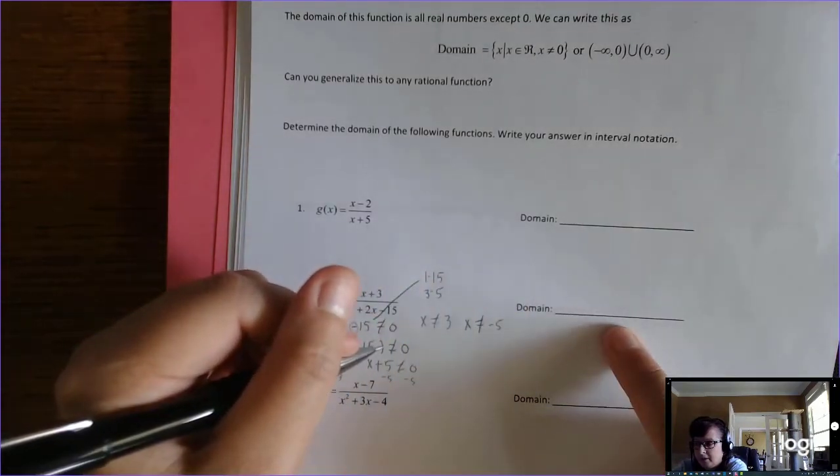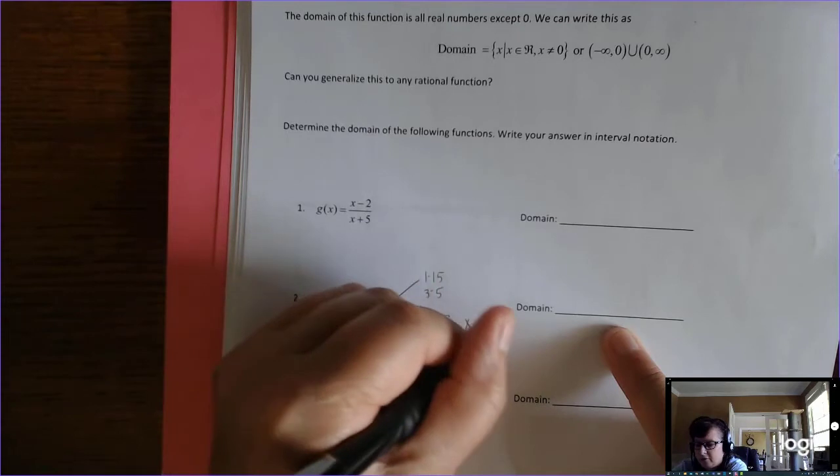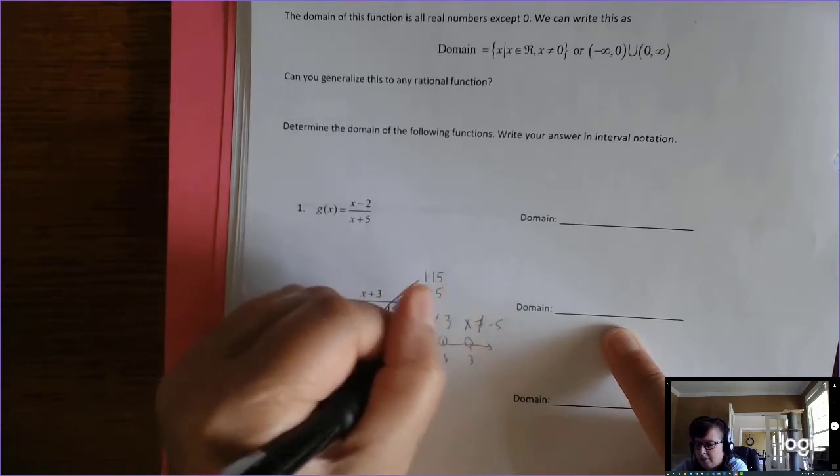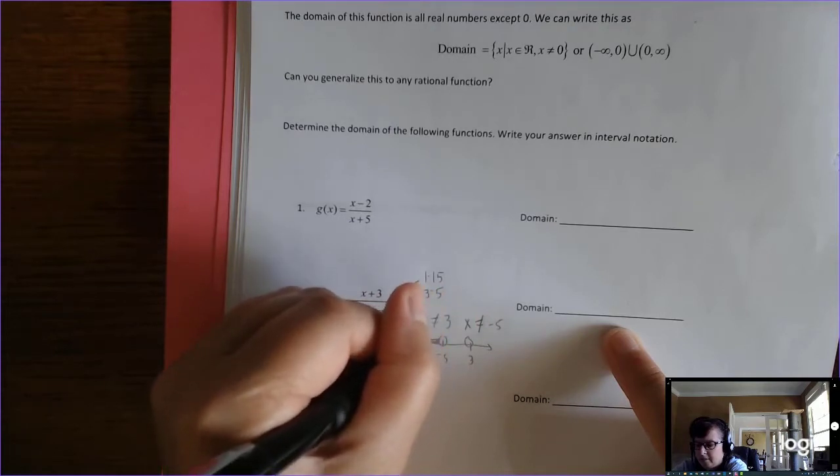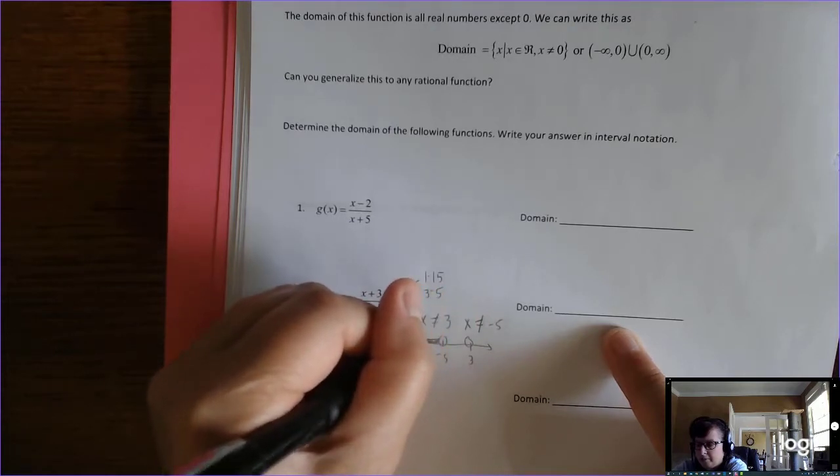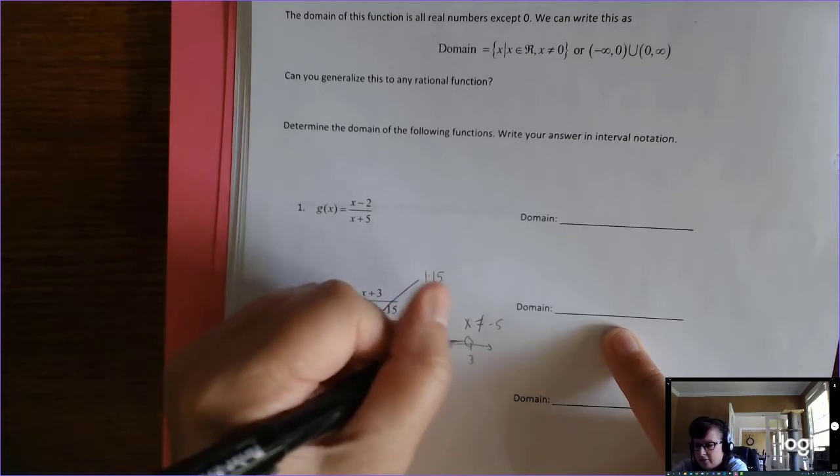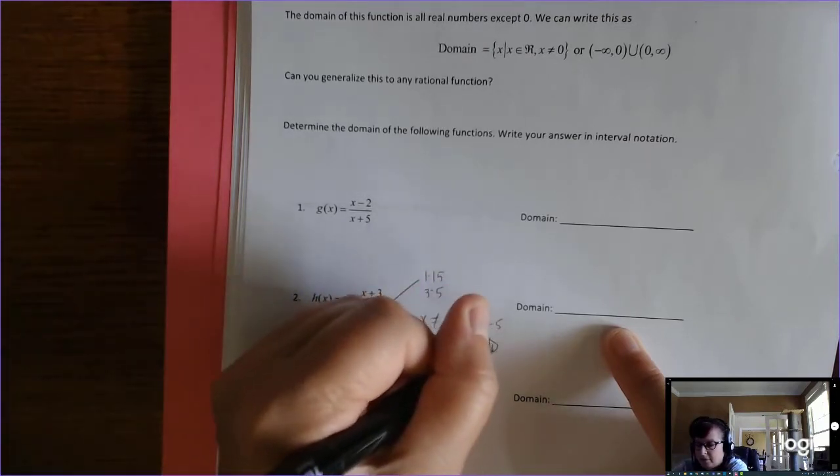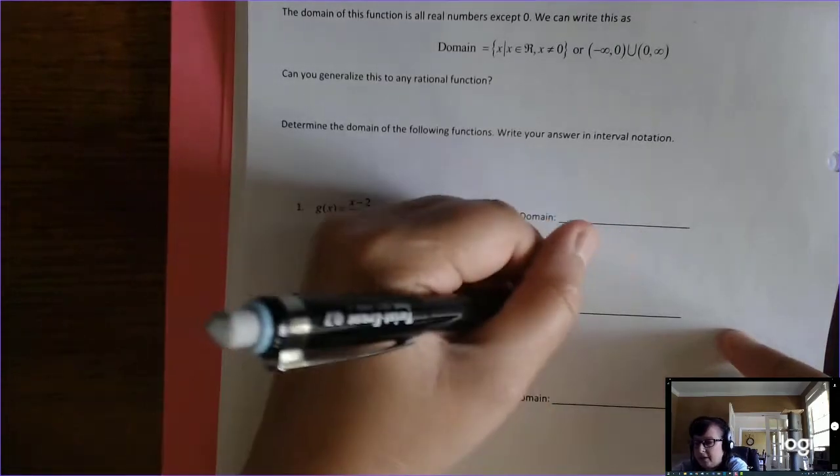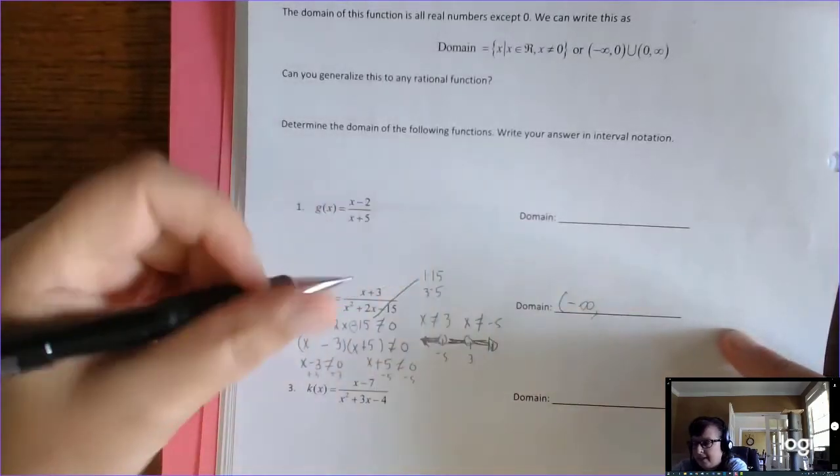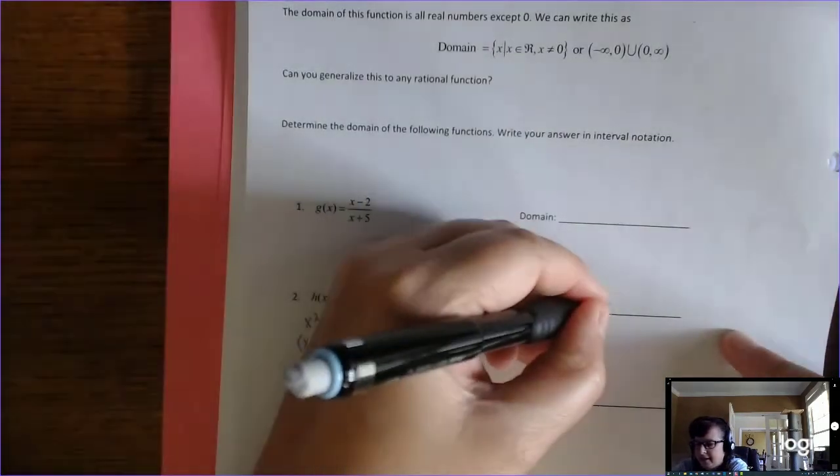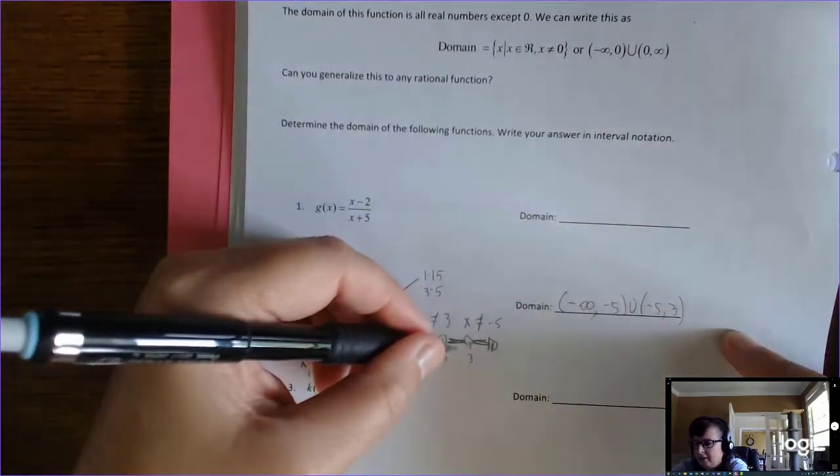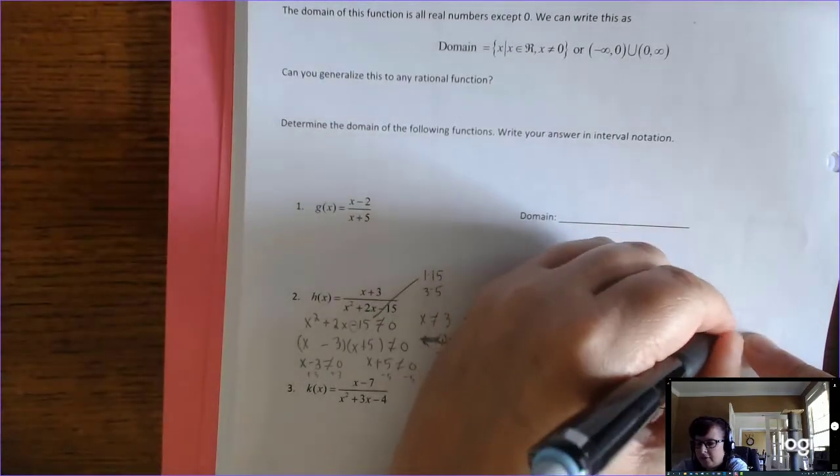Alright, but you wanted interval notation, so remember if you have two restrictions, it's going to show up like this on the graph. A hole here and a hole here, but there's numbers in the domain here, and then there's some numbers in the domain here, and then there's some numbers in the domain here. So in interval notation, that would be negative infinity to negative 5, union negative 5 to 3, union 3 to infinity.